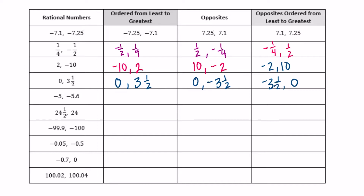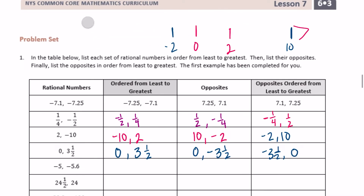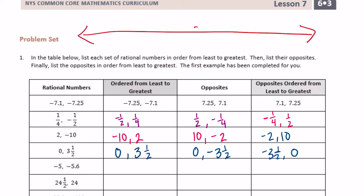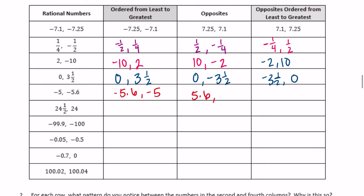Negative five and negative five-and-six-tenths. I think I am going to draw a number line for this one. So we have negative five and negative five-and-six-tenths. Here's negative one, two, three, four, five — and there's negative six. Negative five-and-six-tenths would be somewhere a little bit closer to six than negative five. So negative five-and-six-tenths is less than negative five. Their opposites would be five-and-six-tenths and five.